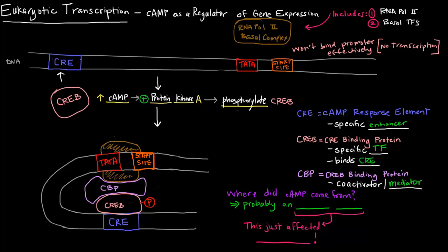CBP mediates the response — it connects the enhancer to the promoter via protein-protein interactions. When that happens, it allows RNA polymerase to bind effectively, and then we have transcription. This is enhanced because initially it couldn't bind effectively. This all happened because cyclic AMP increased. If the cyclic AMP increase did not happen, then CREB wouldn't have the phosphate group attached to it, and transcription wouldn't have been enhanced.